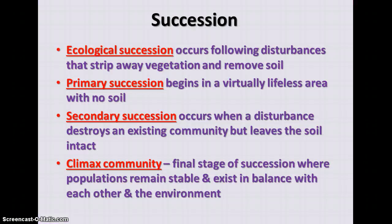Succession occurs following some kind of disturbance that strips away vegetation, possibly removing the soil. There are two main kinds: primary succession, where you start off with bare rock and no soil at all, and secondary succession, where the community has been wiped away but soil is still present.